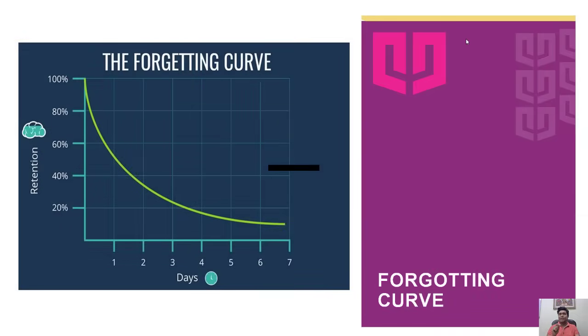So our brain, if you are learning something, behaves as far as this forgetting curve is concerned. You can see the x-axis where number of days are given, and on the y-axis the retention rate is given. When on the first day you are learning something, that goes completely into the mind. But when the days pass, it exponentially decreases, and after seven days it is very close to zero.